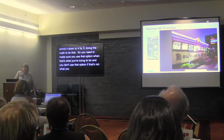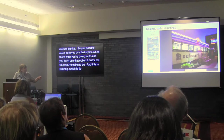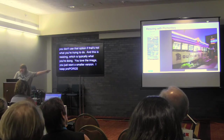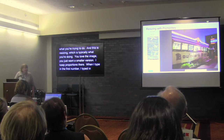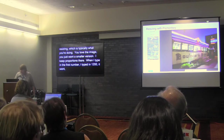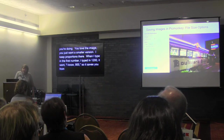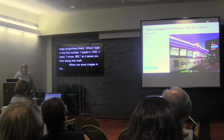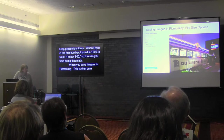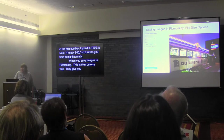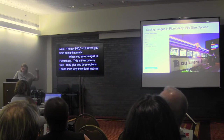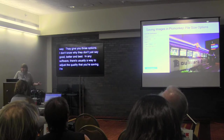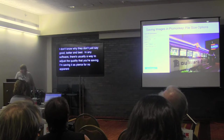This is resizing, which is more typically what you're doing — you love the image, you just want a smaller version. I have 'keep proportions' checked, so when I typed in 1200, it automatically filled in 900. It saves you from doing any math. When you save images in PicMonkey, they have a cutesy way of dealing with file size — they give you three options named Roger, Pierce, and Sean instead of good, better, and best. In any software you're using, there's usually a way to adjust the quality you're saving at. It tells you the file size — that one was a little larger than I'd have liked.